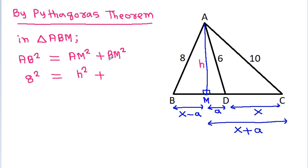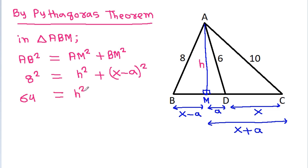AB² equals BM² plus AM², so: 64 is equal to H square plus X square plus A square minus 2XA. This is equation 1.